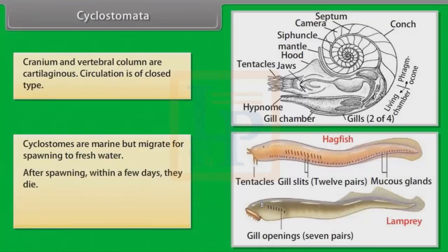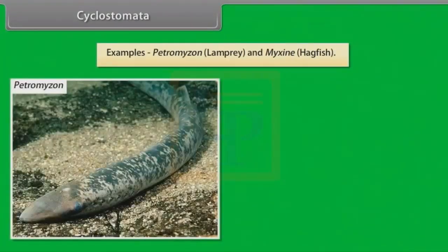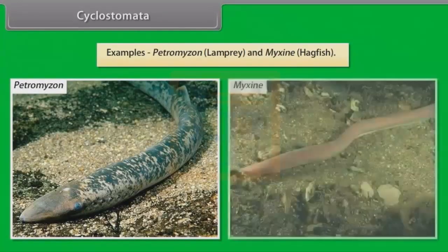After spawning, within a few days, they die. Their larvae, after metamorphosis, return to the ocean. Examples: Petromyzon (Lamprey) and Myxine (Hagfish).